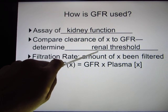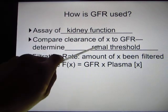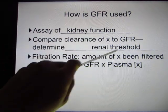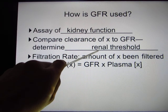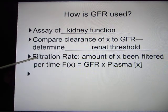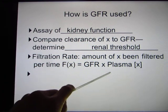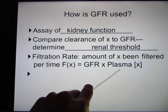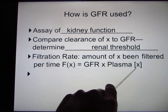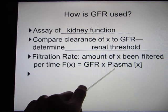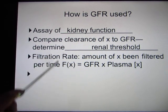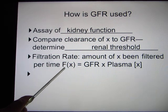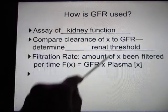We also use GFR to determine the renal threshold — the concentration of a molecule in your blood. If kidney function is not good you cannot handle too much of that molecule. That's what happens in diabetic patients because their renal threshold of sugar is lower than normal, so they have to watch the carbohydrates they eat. The filtration rate depends on GFR multiplied by the plasma concentration of that molecule. If you eat a lot of carbohydrates and blood sugar is high, more sugar will be filtered into your kidney and the kidney needs to work very hard.